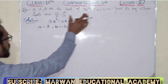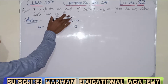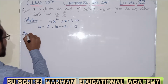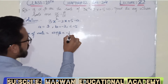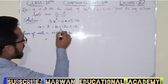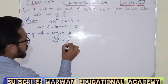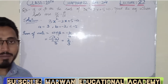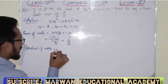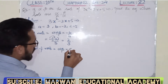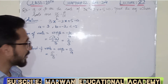We have the equation 3x squared minus 2x plus 5 equals 0. Now, sum of roots is equal to alpha plus beta which is equal to minus b over a. The value of b is minus 2, so minus into minus 2 divided by a which is 3, giving us plus 2 divided by 3. The product of roots is equal to alpha beta which is equal to c over a. The value of c is 5 and a is 3, so product of roots is 5 over 3.